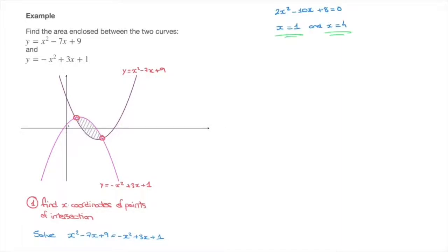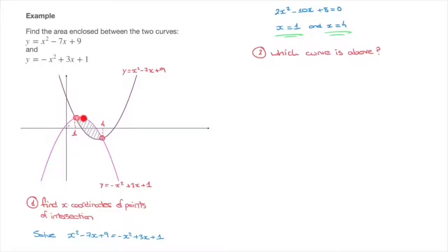These two values of x are the x coordinates of the points of intersection of the two curves. We label our graph: the first point of intersection has x coordinate 1, and the second has x coordinate 4. We've finished step 1. In step 2, we determine which of the two curves is above the other between the two points of intersection. Since we've plotted the curves, we can see that the pink curve — y equals negative x squared plus 3x plus 1 — is above, for x between 1 and 4.